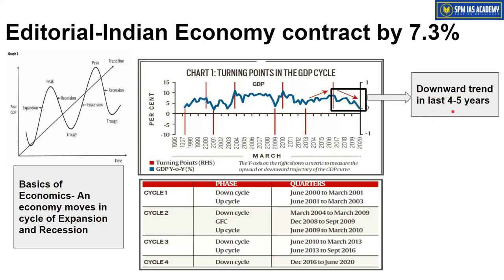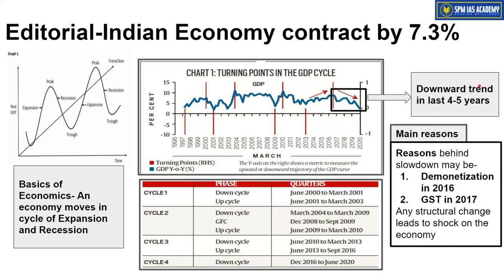So a downward trend could be seen in the last 4-5 years itself — it's not that the slowdown started only after COVID-19. The two main causes cited for this downward trend are demonetization, brought in November 2016, and GST reform introduced in 2017. Any new structural reforms introduced into an economy will have some negative short-term impact — just like a vaccine causes fever for a few days as side effects. The problem was that these two short-term shocks — demonetization and GST — happened back to back, and while the economy was still struggling with both, COVID-19 struck.